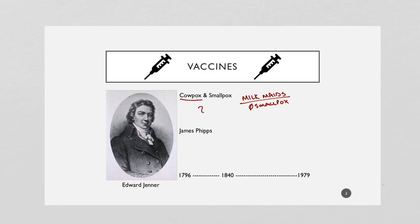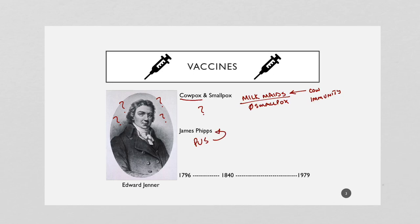Cowpox didn't cause the horrible scarring that smallpox causes, and it certainly didn't kill as many people. So Jenner had all these questions — why is that? He theorized that whatever was giving these women cowpox was coming from the cows and was giving some sort of immunity to smallpox. He didn't understand exactly how — this was before there was an accepted theory of how germs work. So what he did is he took some cowpox and injected this boy named James Phipps back in 1796. The boy developed cowpox and was fine. Then a few days later, he gave him a dose of smallpox. Lo and behold, James Phipps did not develop smallpox — he had become immune to it.